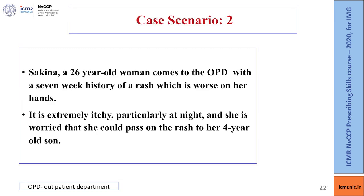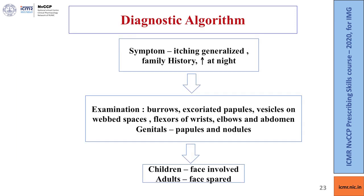Case 2: Sakina, a 26-year-old woman, presents with a 7-week history of rash worse on her hands, extremely itchy particularly at night. She is worried about passing the rash to her 4-year-old son. Symptoms include generalized itching, family history of itching, and itching worse at night. On examination, burrows and excoriated papules are found.